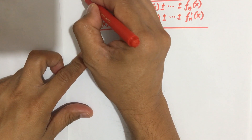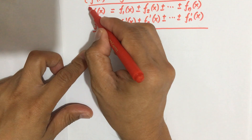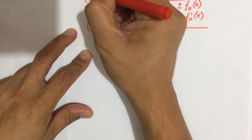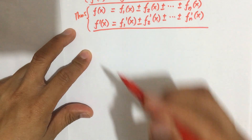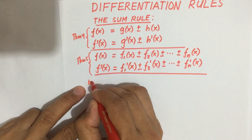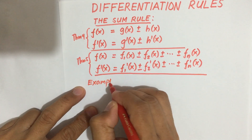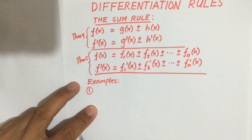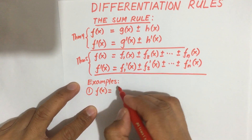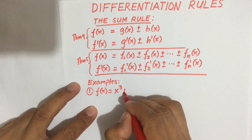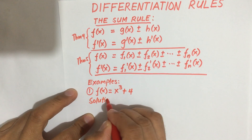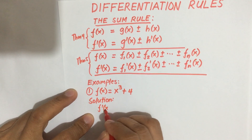In our discussion, this is theorem number 4 from our previous lecture, and this is theorem number 5. Now for example number 1, if we are given f(x) equal to x cubed plus 4, using the sum rule, our f'(x) is equal to — we take the derivative of each function.